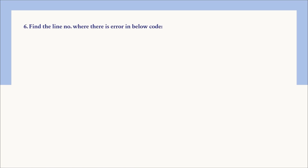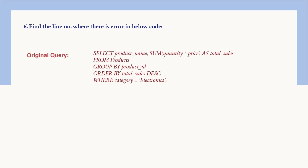The sixth question: find the line number where there is an error in the given code. The error is that the WHERE clause is incorrectly placed after the ORDER BY clause. The correct SQL syntax order is SELECT, FROM, WHERE, GROUP BY, ORDER BY. To fix this, move the WHERE clause before the GROUP BY clause. That is the corrected query.